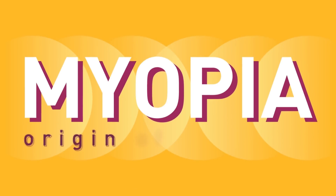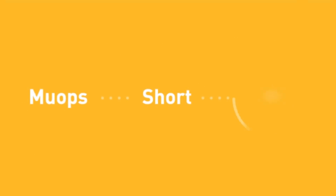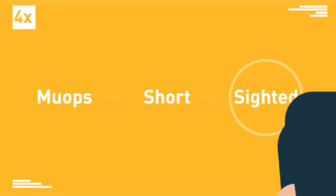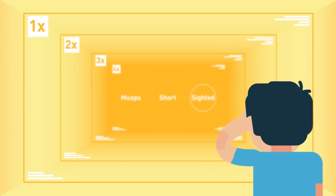Myopia. Origin of the word: it comes from the Greek word 'myops,' meaning short-sighted. These people cannot see distant objects clearly.